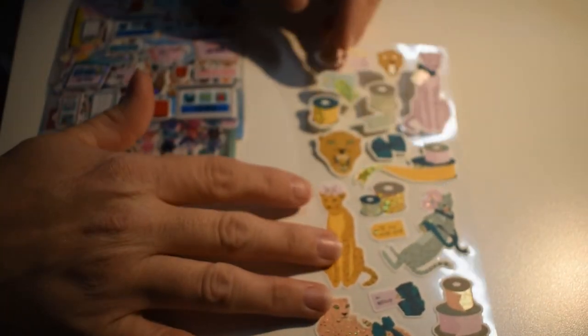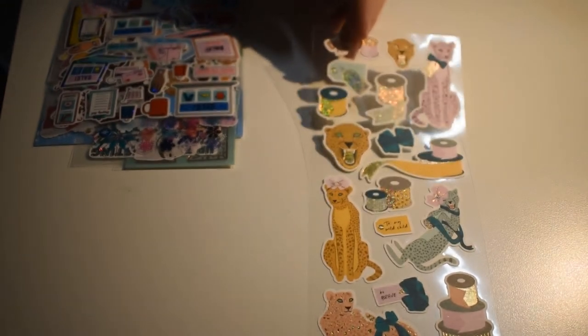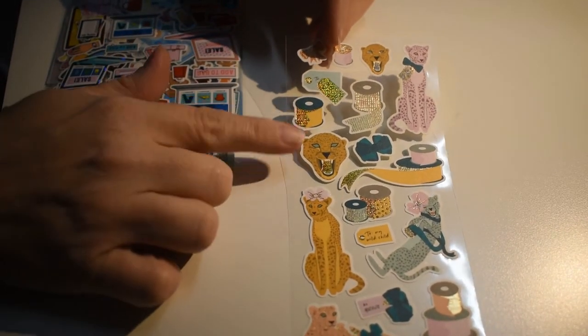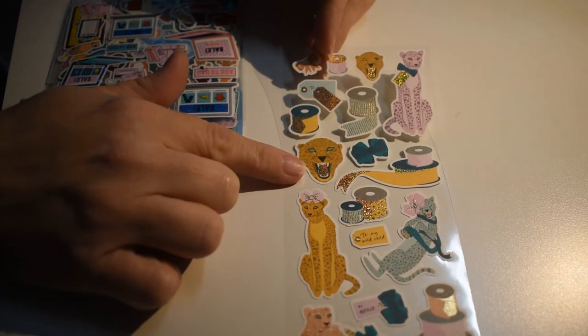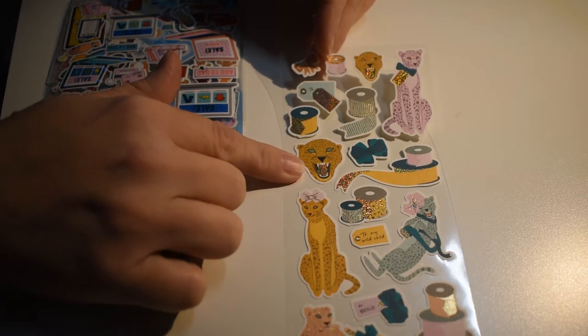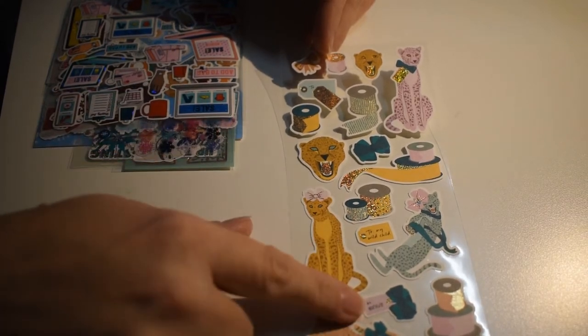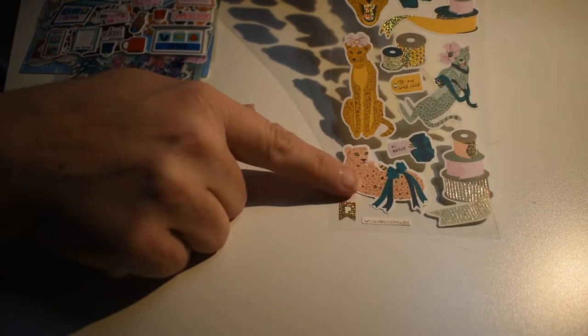What do we got here? Oh, we got some leopards. I'll focus a little bit. This kind of reminds me of the leopard on the Masked Singer. It looks very much like that. It says, 'To my wild child, be brave.' Very, very nice. I like the sparkles on that, too.